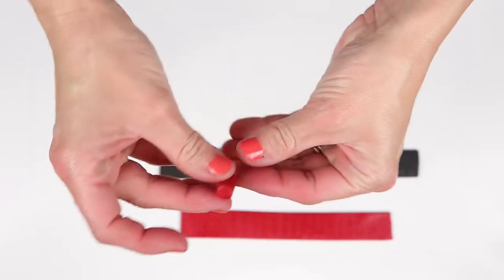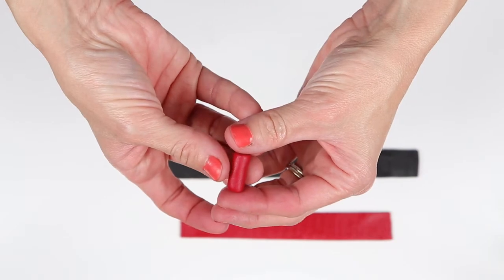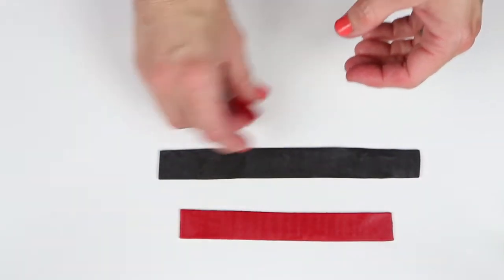A bullseye cane is fairly simple. Just take your red clay and wrap it alternating between the red and the black clay.